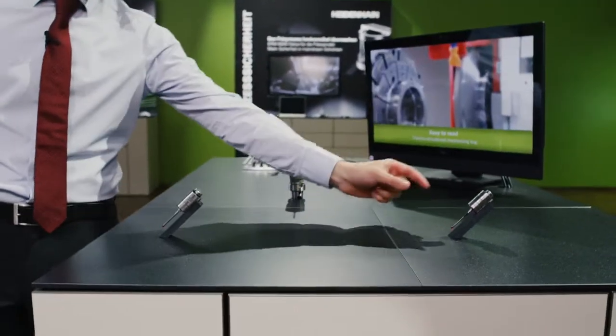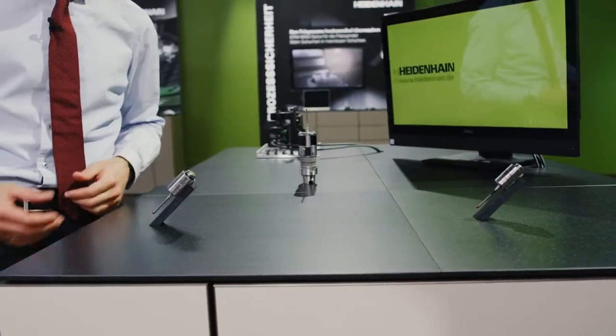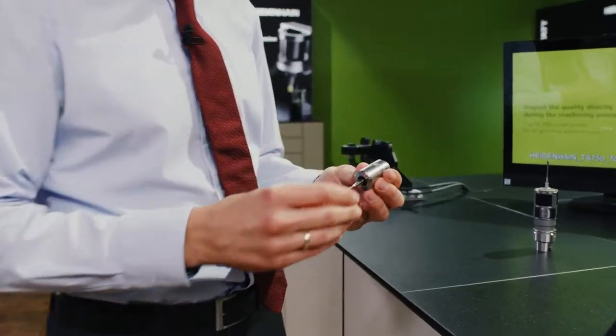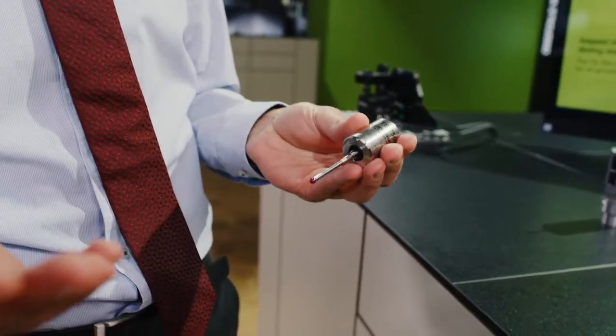These are the key touch probe models for grinding machines, the TS-150 and the TS-750. What benefits do these models give you?